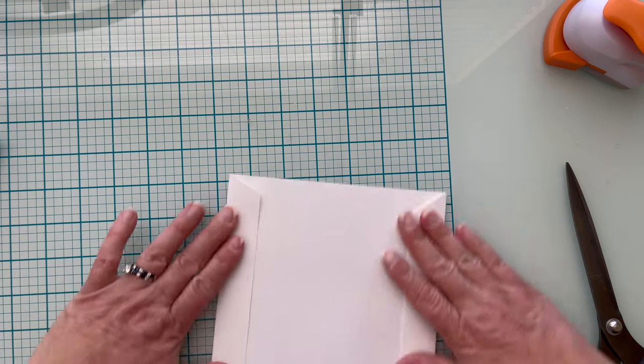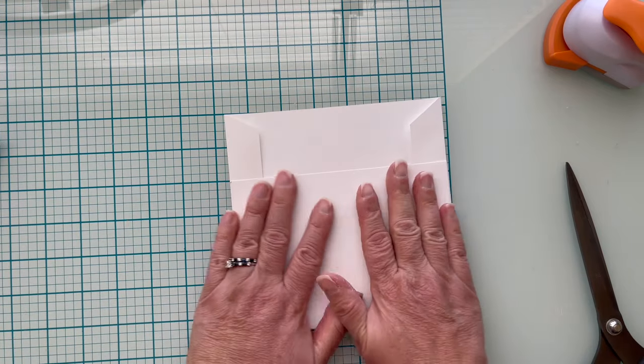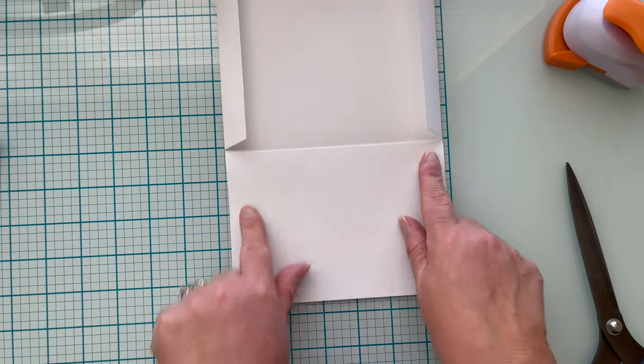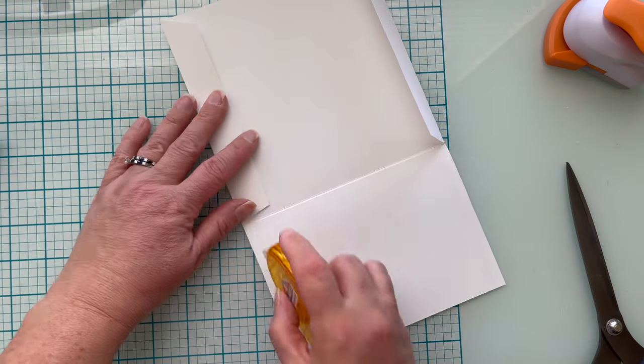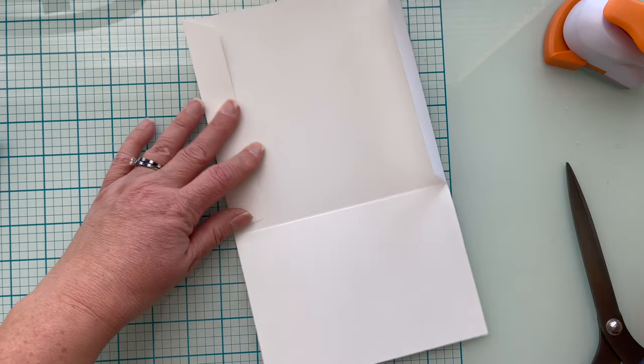To complete the base of our card we're going to fold our tabs in and fold the bottom towards the top. Now we're going to use some tape runner here. You could use double sided adhesive but you don't want to put it on the tabs.